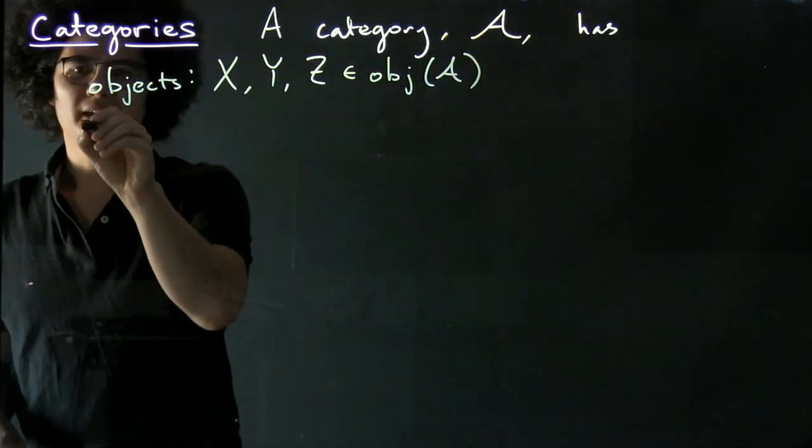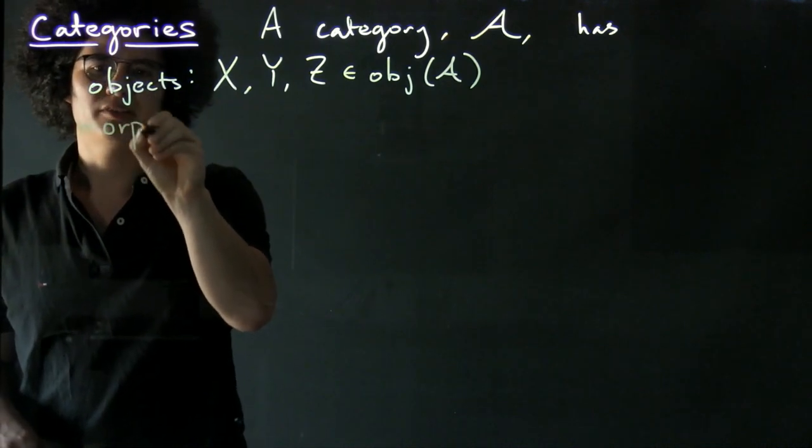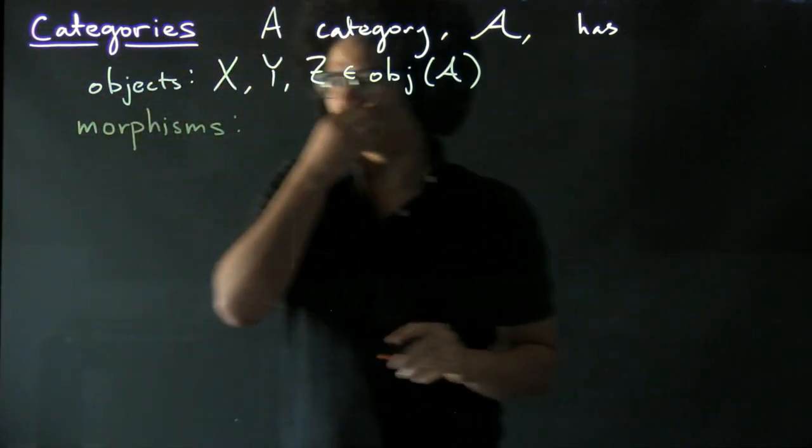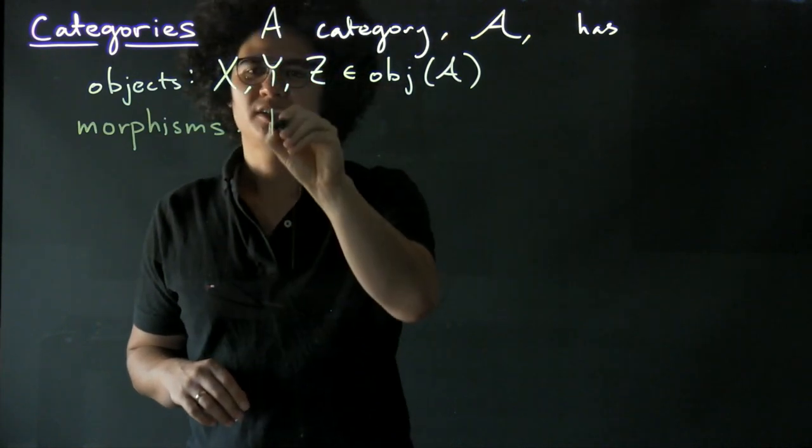Alright, next we have for each pair of objects a set of morphisms. So we'll write our set of morphisms between two objects, say X and Y, as either Hom from X to Y,